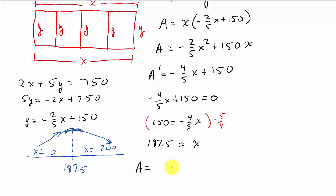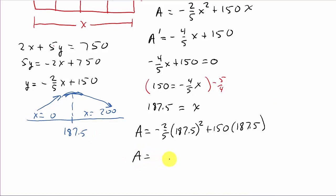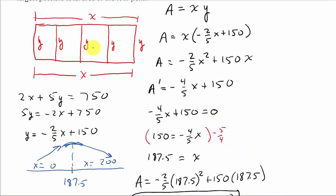So, the area is, and I'm going to plug the 187.5 into here. So, that's negative 2 fifths times 187.5 squared plus 150 times 187.5. And when we plug that into our calculator, you get 14,062.5. And that's square feet. And so, that would be the maximum area possible of all four pens total.